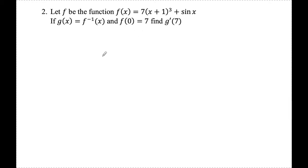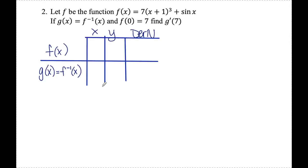Number two: let f be the function f(x) equals 7 times (x plus 1) cubed plus sine x. If g(x) equals f inverse of x and f(0) equals 7, find g prime of 7. I'll set up a table with f and f inverse. Since I'm looking for g prime of 7, I put x equals 7 in the g row, meaning the original has y equals 7. They told us f(0) equals 7, so x equals 0 and y equals 7 in my original — that matches up. If they hadn't told me this, I'd have had to solve 7(x+1)³ + sin x = 7, which would have been a pain.